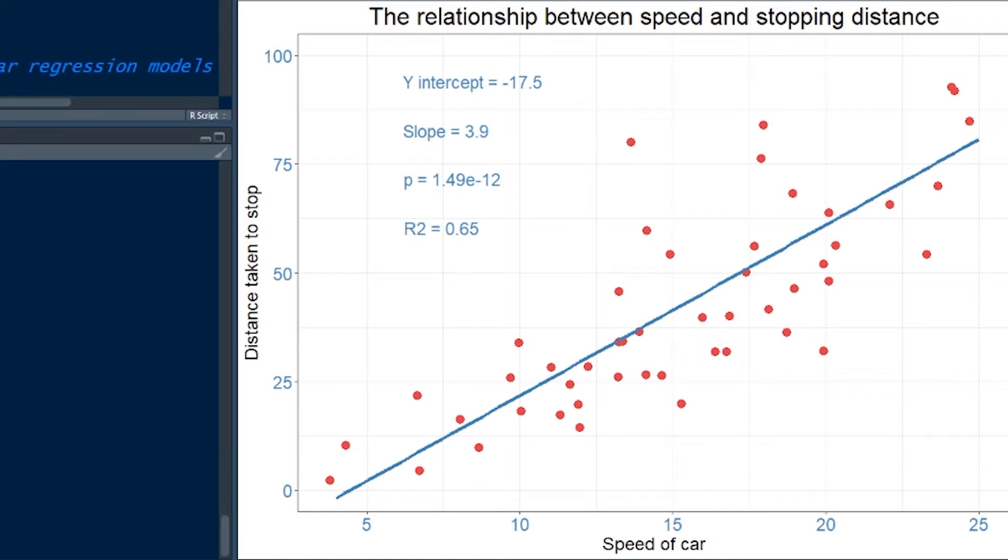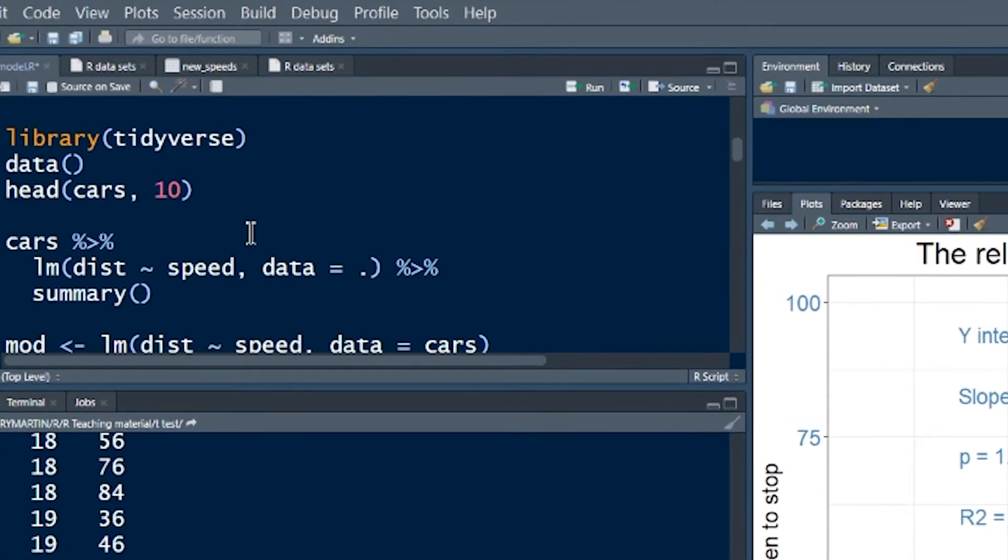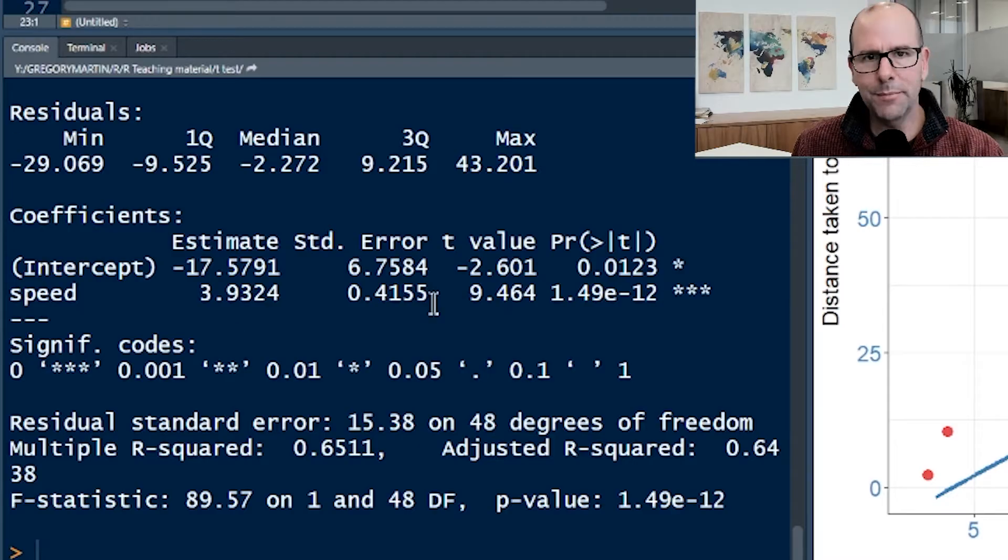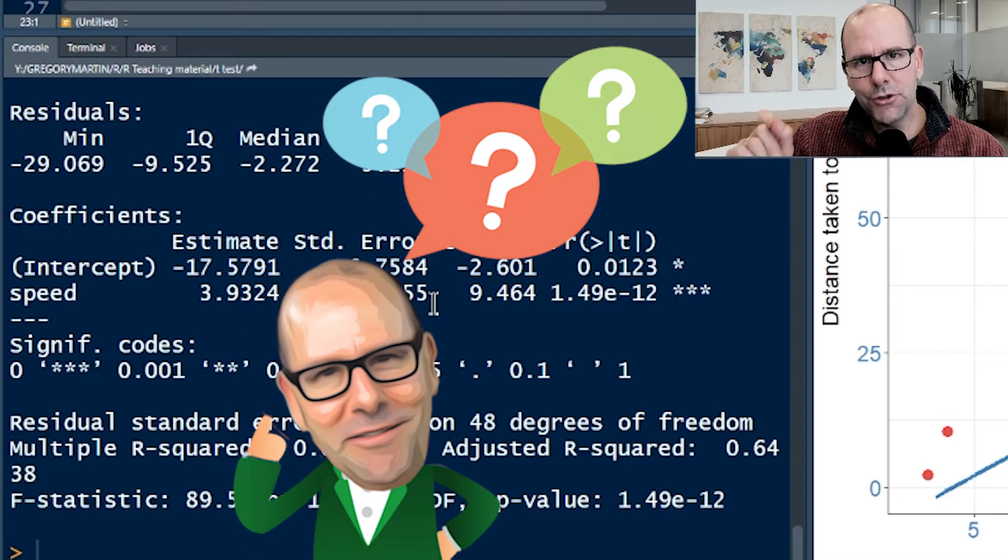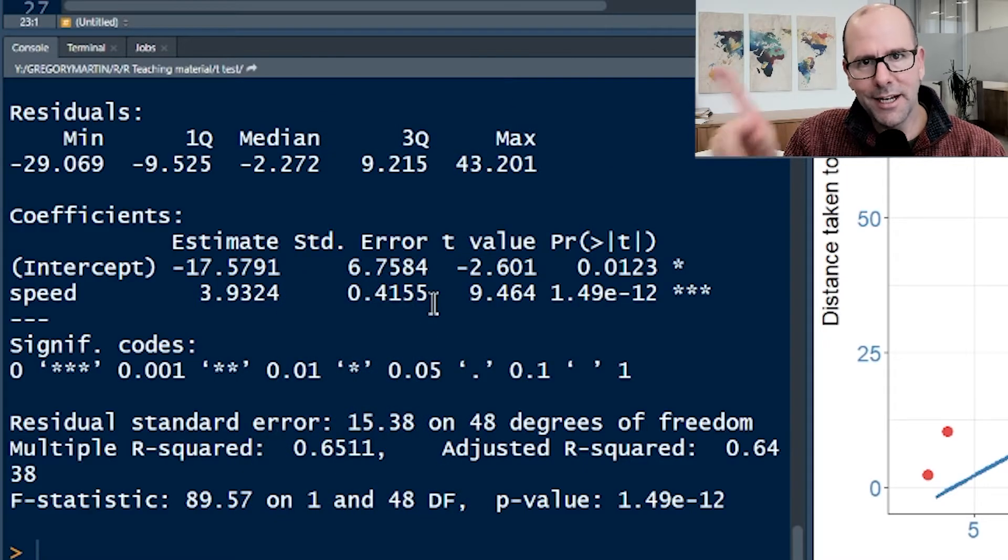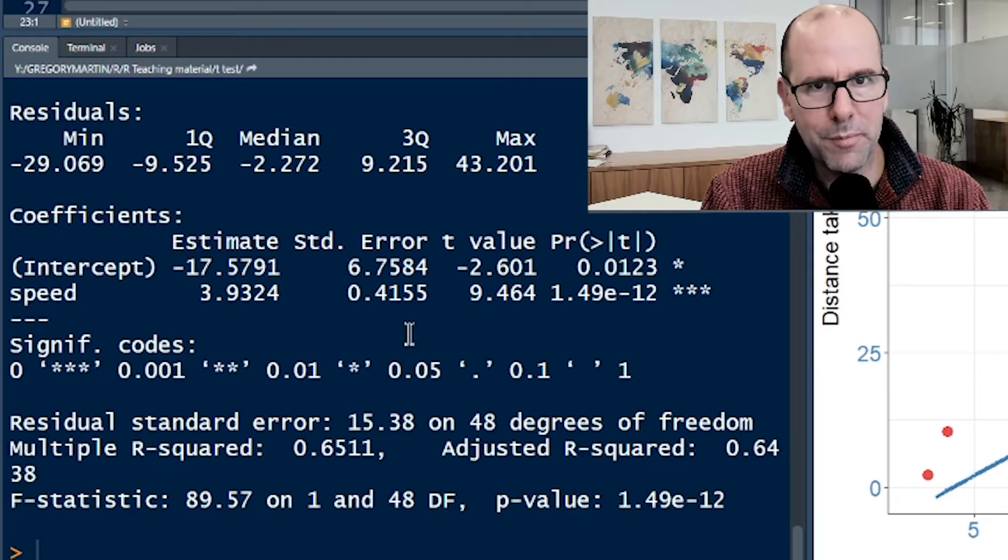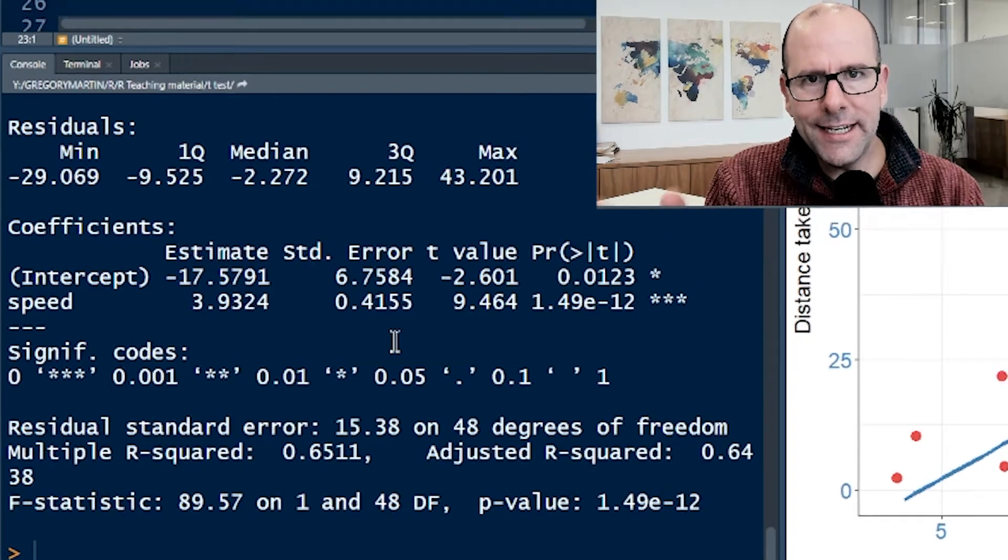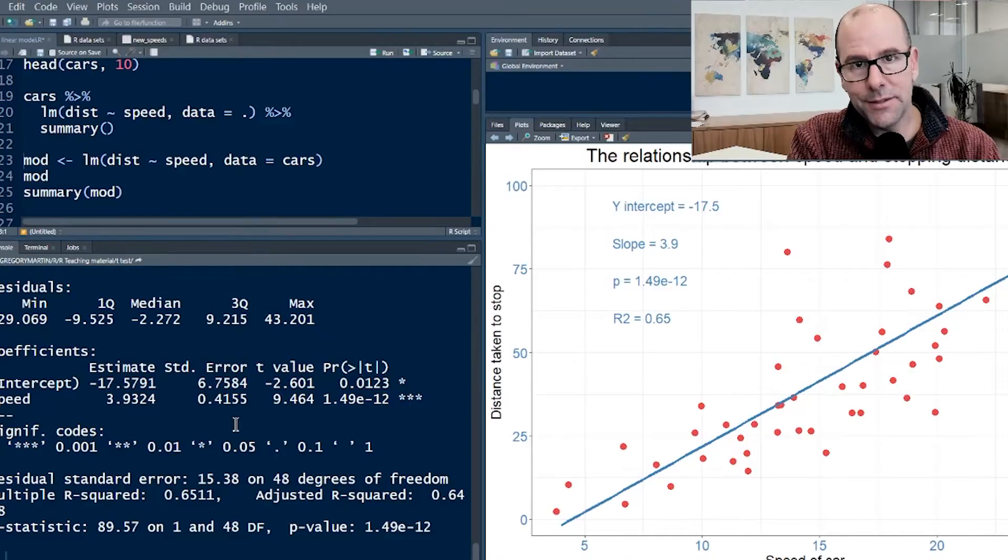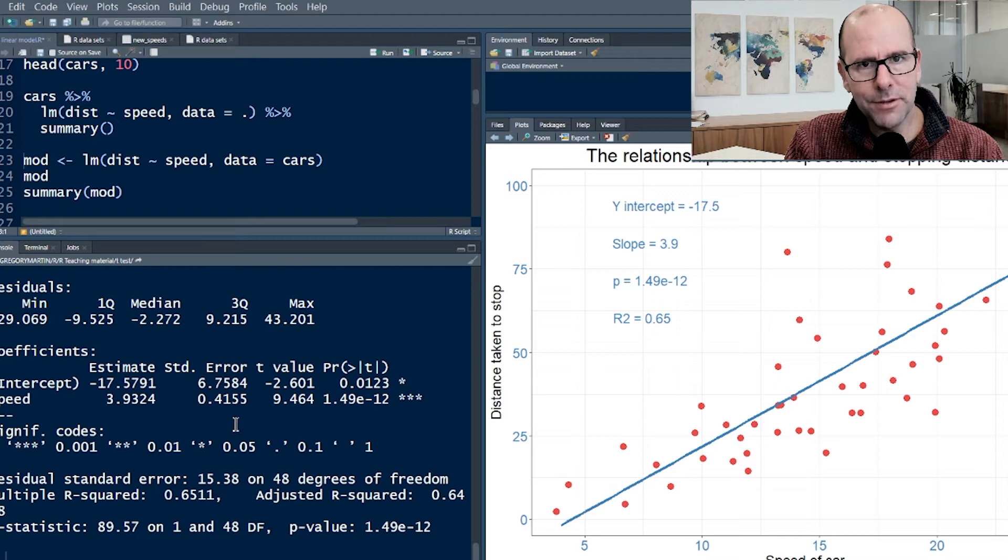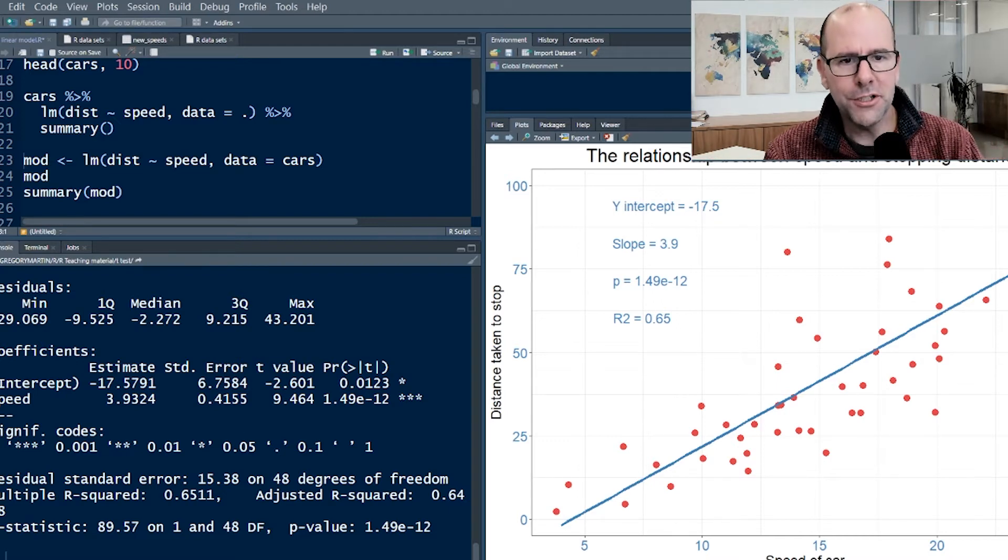We create a model and up comes a whole lot of numbers. The big question is how do we interpret these numbers? How do we answer certain questions about this data from those numbers? Of all the numbers that pop up from the model, there's only four that you really need to understand. I'm going to talk you through that right now.